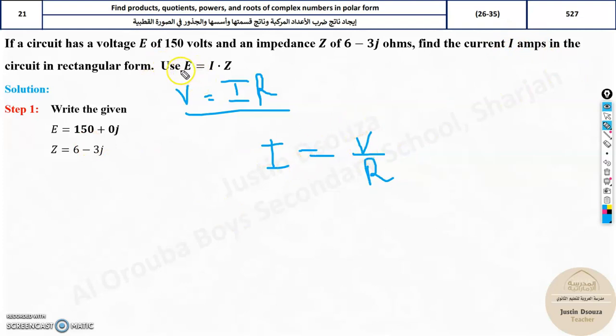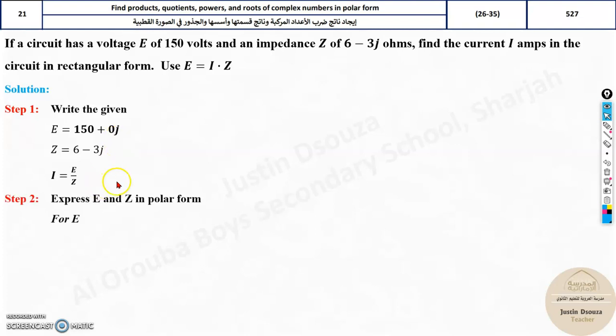Current is required. So what you need to do is the voltage. In this case, it will be E divided by Z. So voltage divided by the resistance. So now let's write the given first. Voltage is given as 150 volts. Is there any imaginary part like this? No. So it's 0. What about the resistance is given as 6 minus 3j, resistance or impedance? The formula to find I is E divided by Z. What do we do? Can we use this directly? No. We need to convert this into polar form. So express E and Z in polar form.